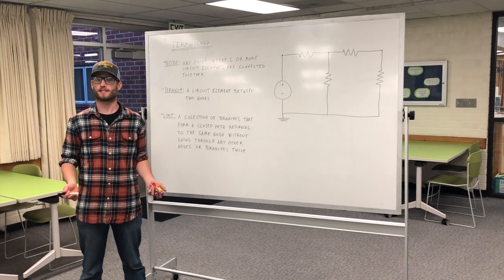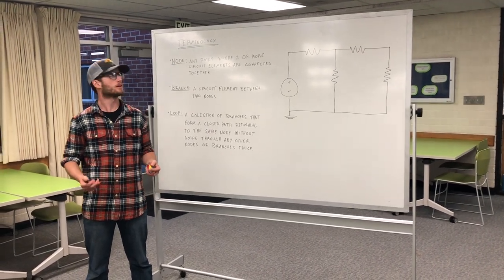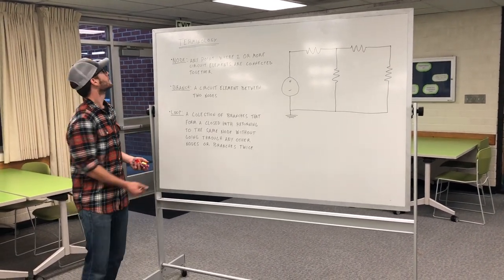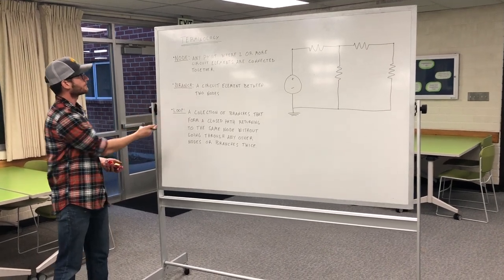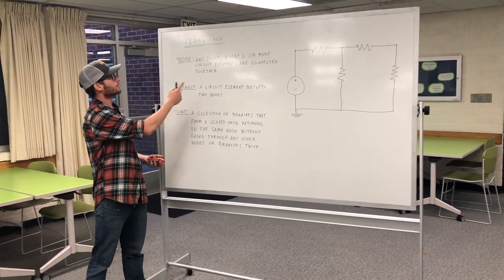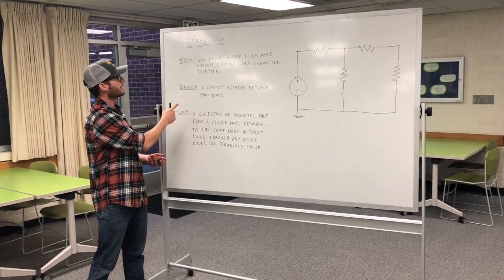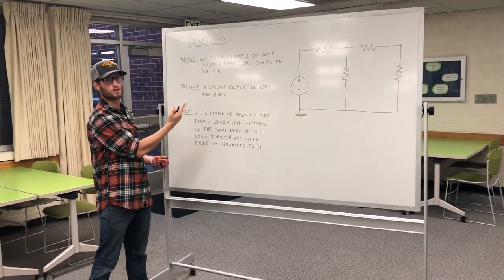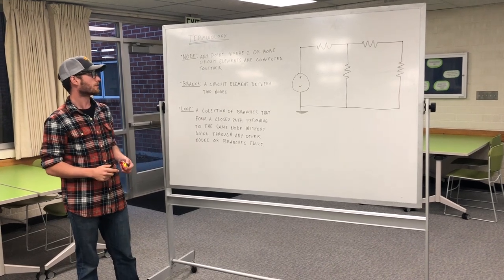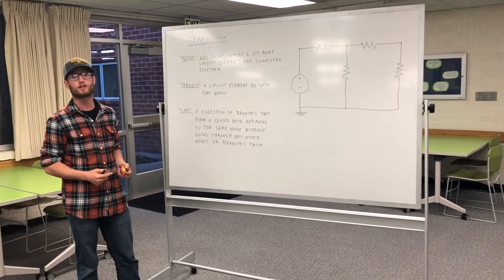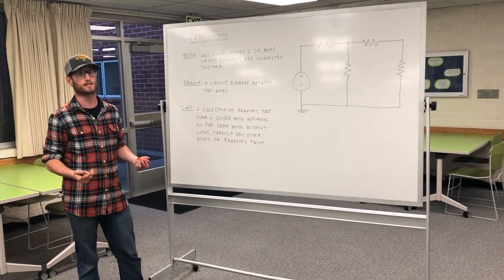Before we do an example of KCL and KVL, we need to go over some basic terminology. A node is any point where two or more circuit elements are connected together. A branch is a circuit element between two nodes, and a loop is a collection of branches that form a closed path returning to the same node without going through any other nodes or branches twice.